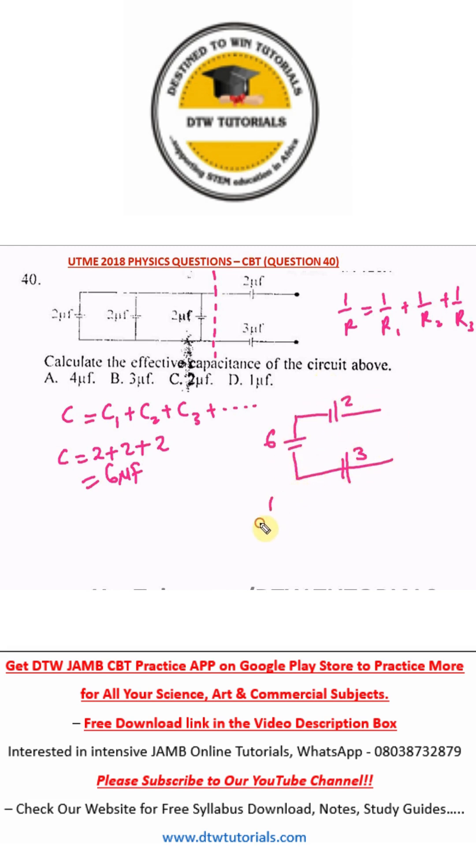1 over C equals 1 over 6 plus 1 over 2 plus 1 over 3. What's the LCM of these three digits? It is 6. 6 divided by 6 will give us 1, and 1 times 1 is 1. 6 divided by 2 is 3, so 3 times 1 is 3. 6 divided by 3 is 2, and 2 times 1 is 2.